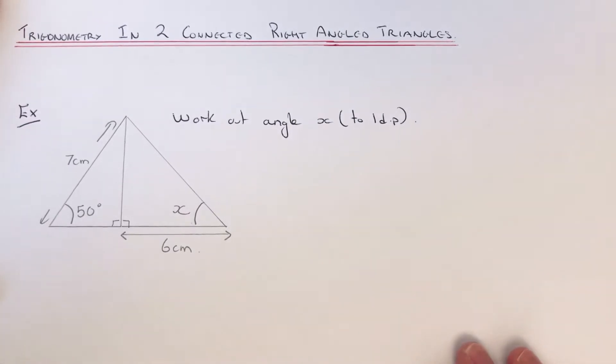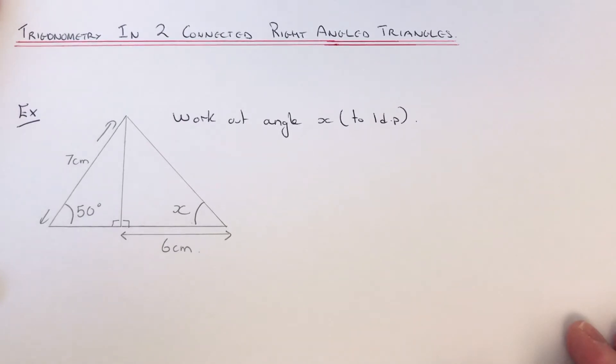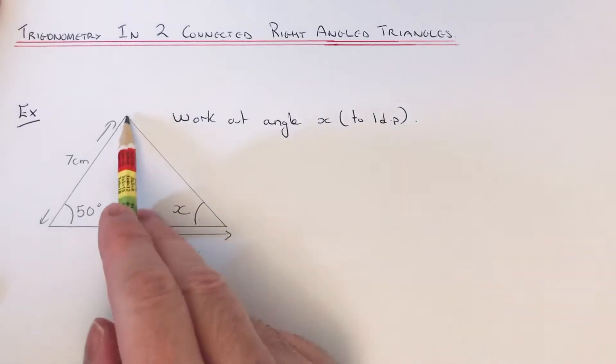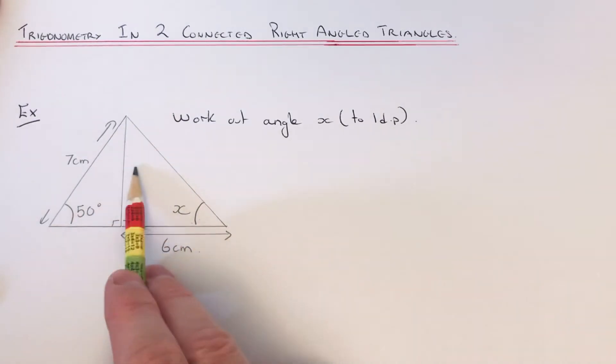Hi guys, welcome back. This is Maths 3000. Today I'm going to show you how to use trigonometry in two connected right angle triangles. Let's have a look at the example here. We've got to work out angle X, and we have a right angle triangle on the left and a right angle triangle on the right hand side.